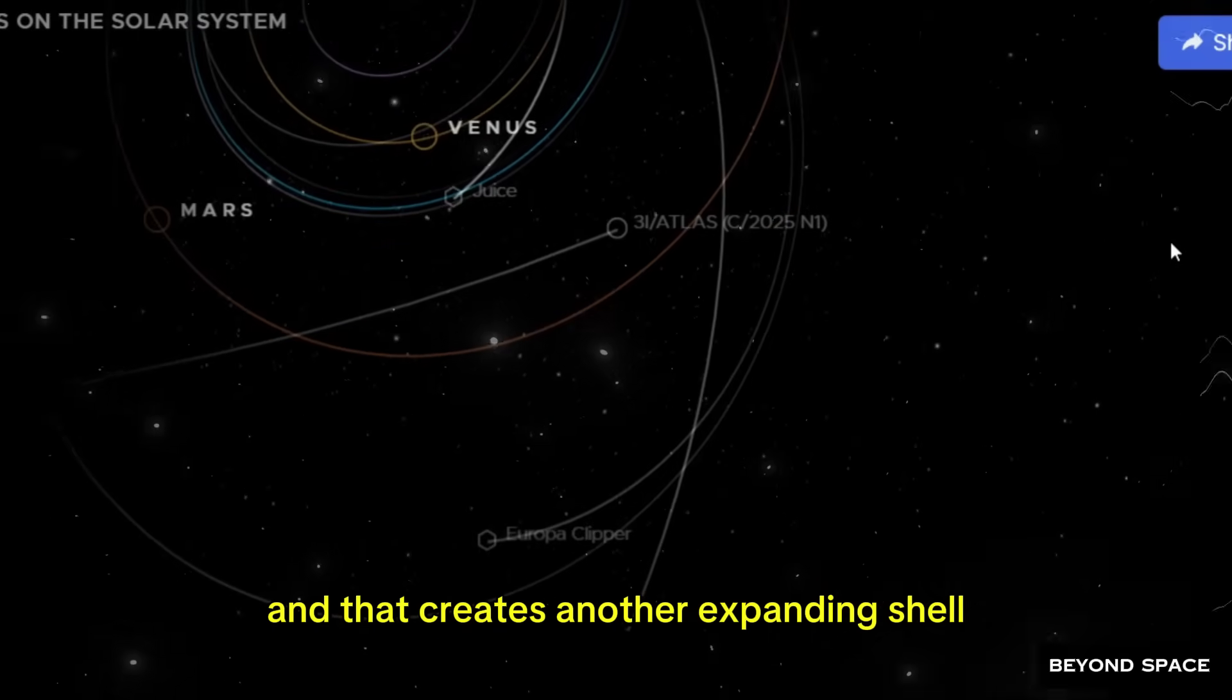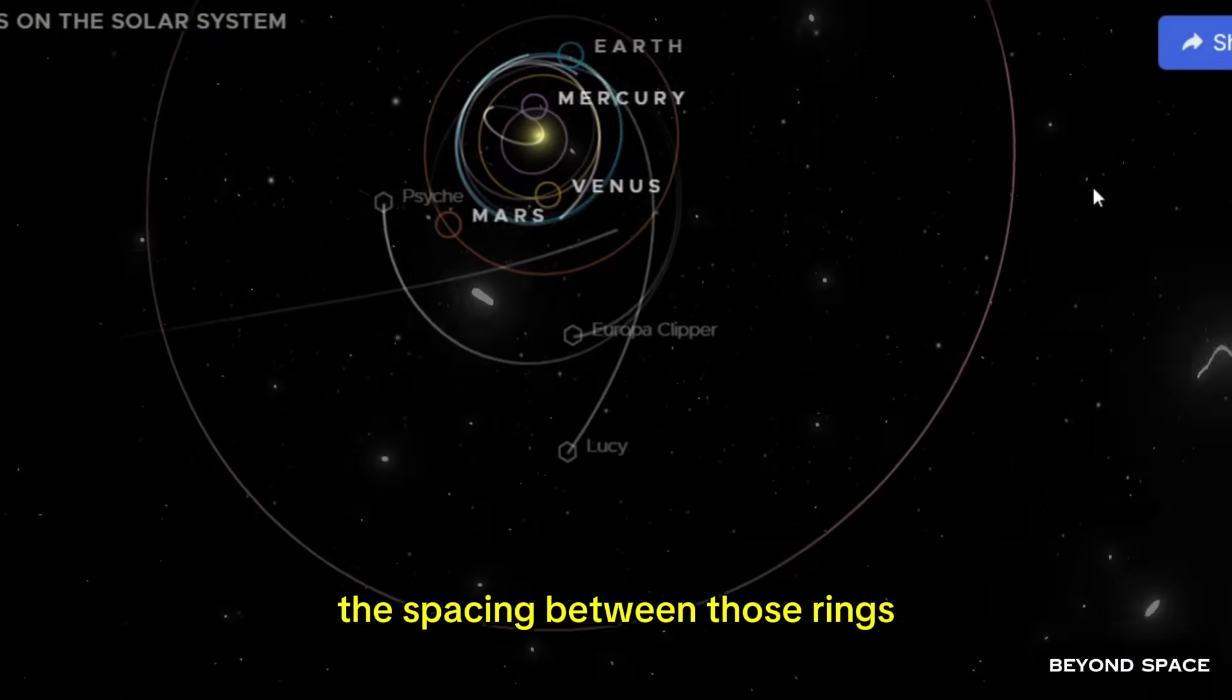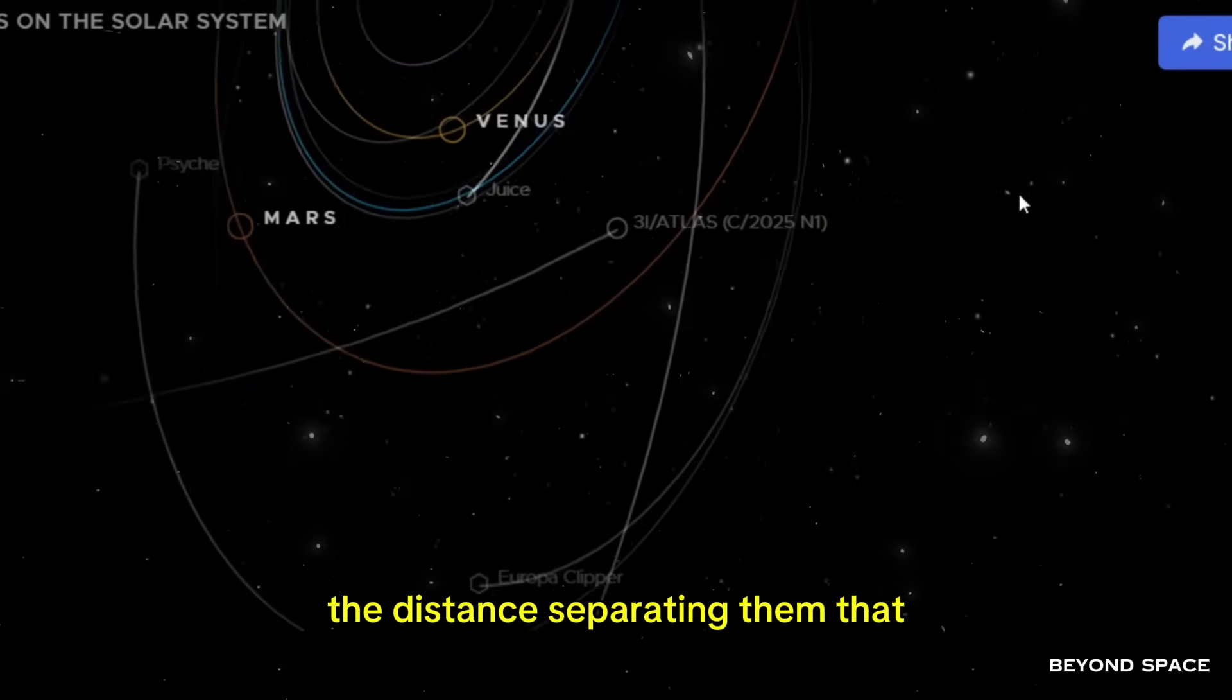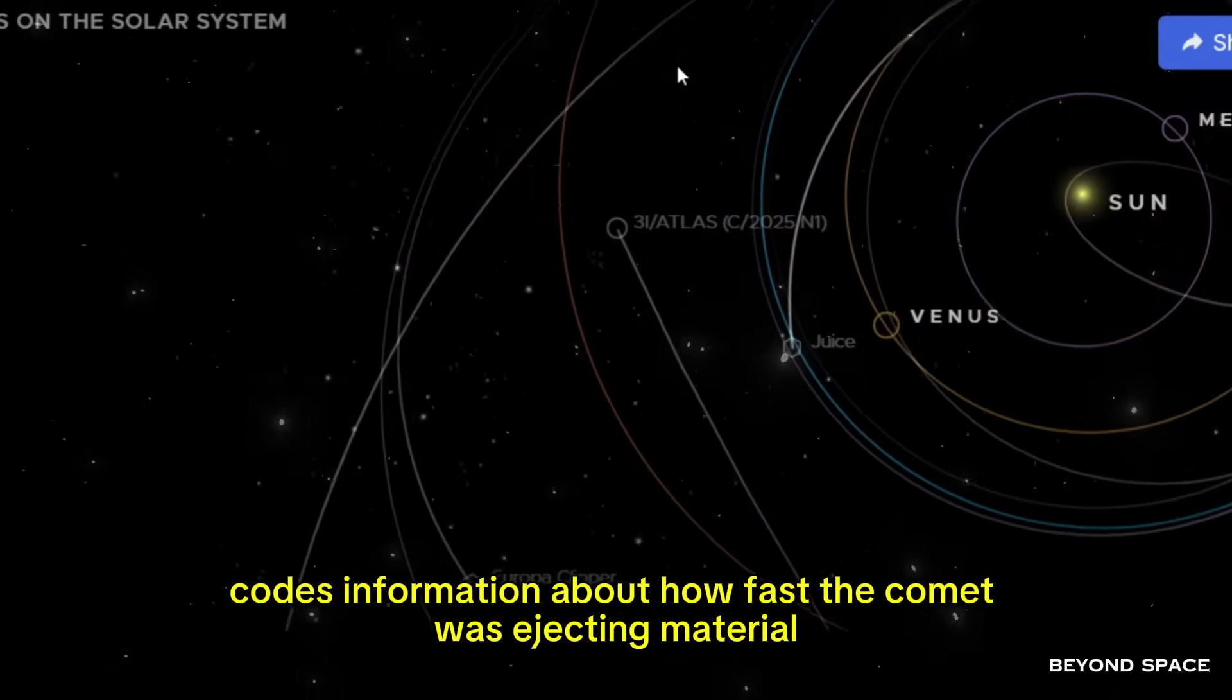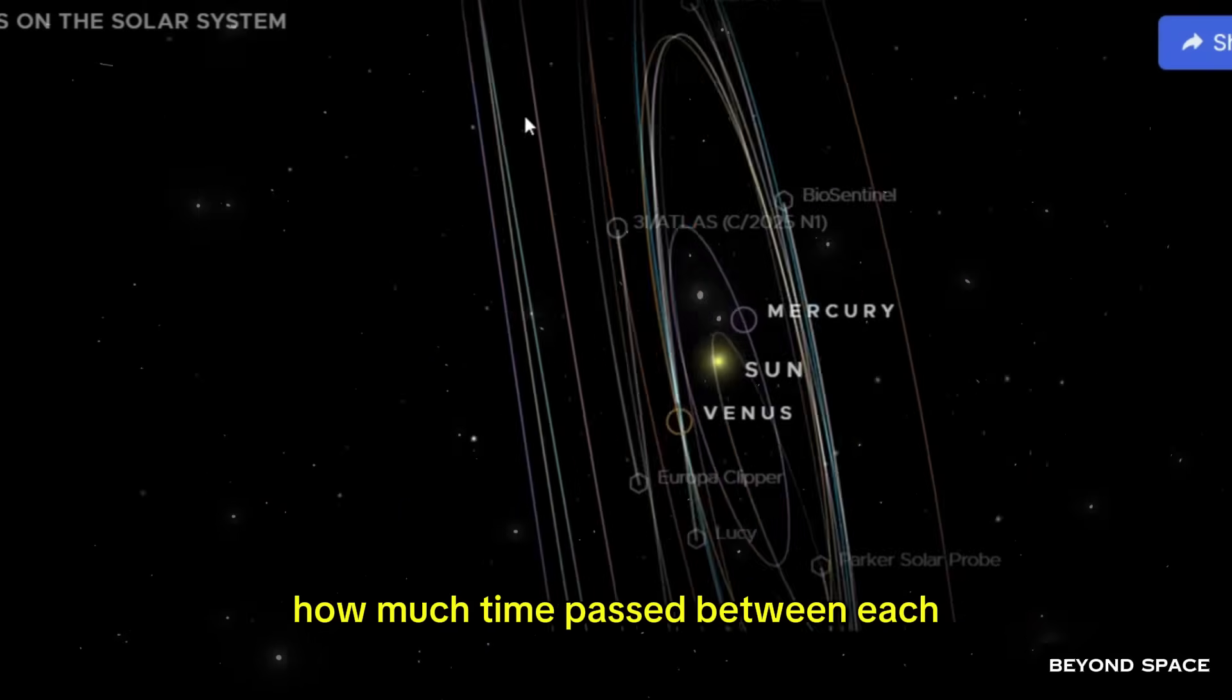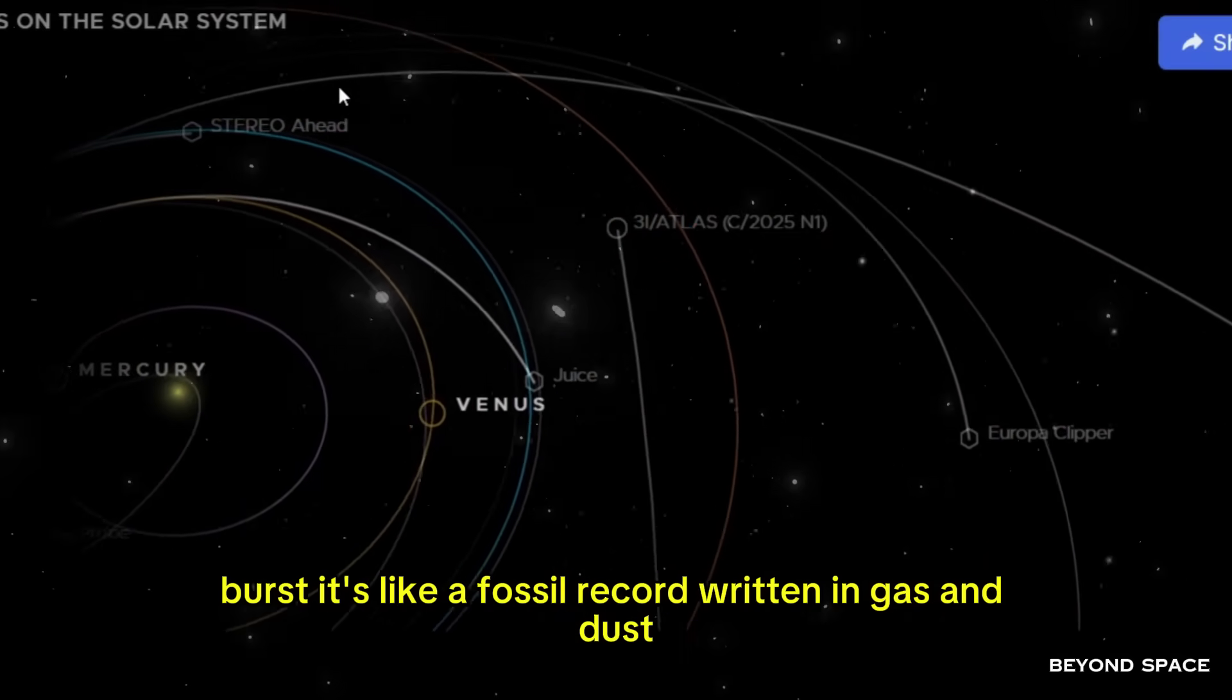Think of it like this. Every time the comet has a major outburst, it ejects a bunch of material all at once. That material starts expanding outward into space. Then some time passes, the comet has another outburst, and that creates another expanding shell, and then another. Each pulse leaves a ring. The spacing between those rings, the distance separating them, that encodes information about how fast the comet was ejecting material, how much time passed between each burst. It's like a fossil record written in gas and dust.